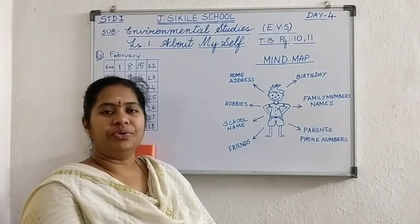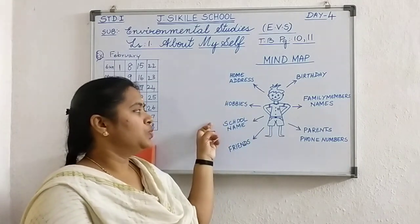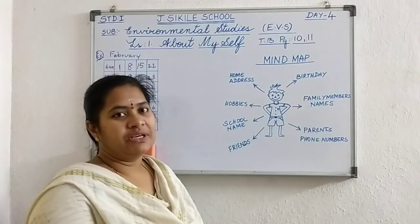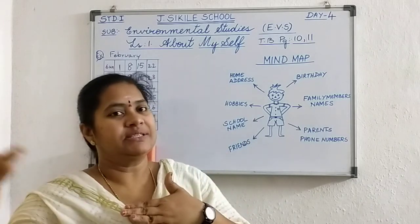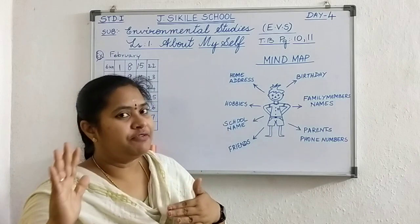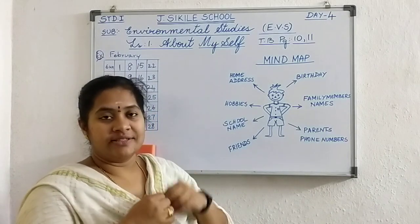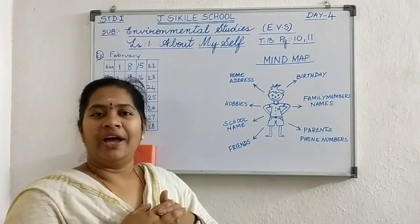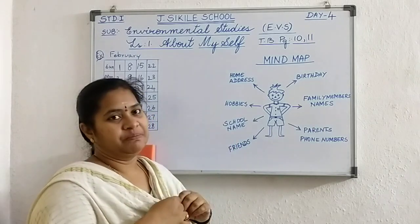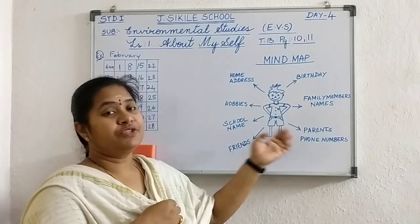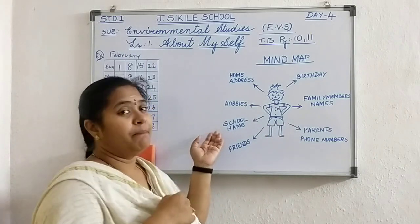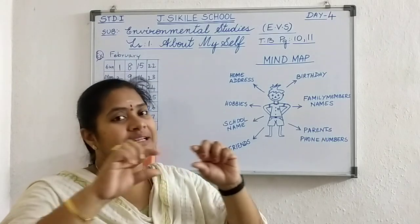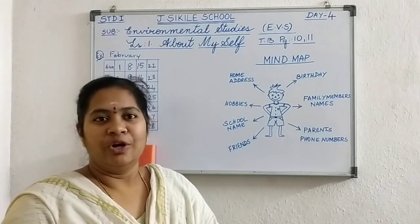So you are practicing your address, school name, friends' names, your birthday date, and family members' names — saying it in a sentence. My name is Chandana. I am 5 years old. I like dancing. I like reading books. My friends are Sonu and Monu and I like to play with them. My hobbies, my parents' phone number — you have to practice that also. My school name is Jessica School. I study in class 1. Like that, in a sentence, you practice every day.